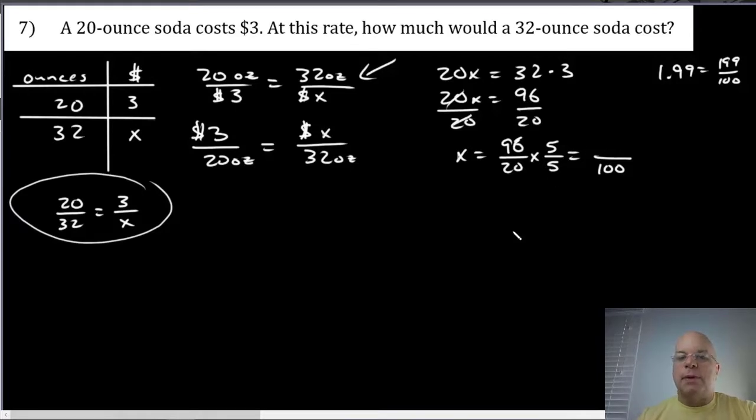So 96 multiplied by 5—100 fives is 500. I have four fewer fives than that, so I have 20 less than 500, which is 480. So 480 hundredths is four dollars and 80 cents.